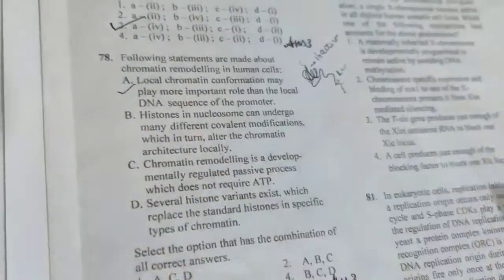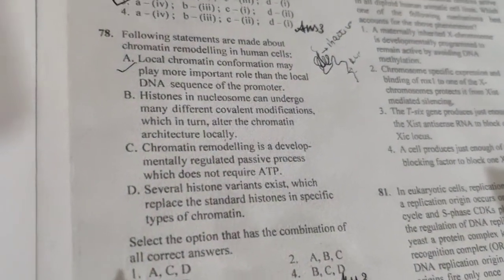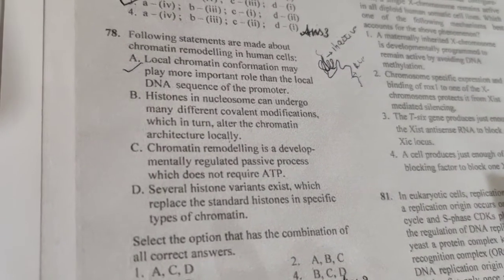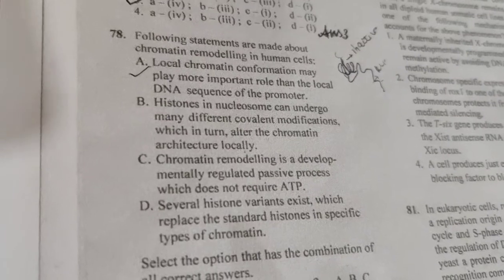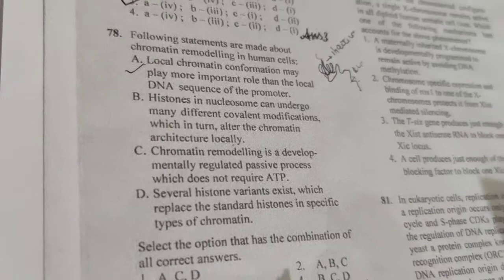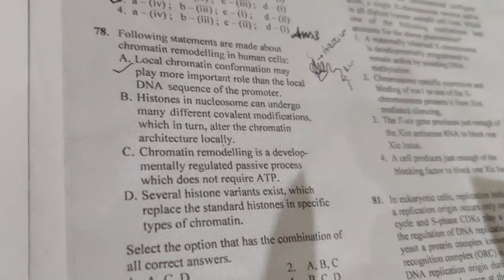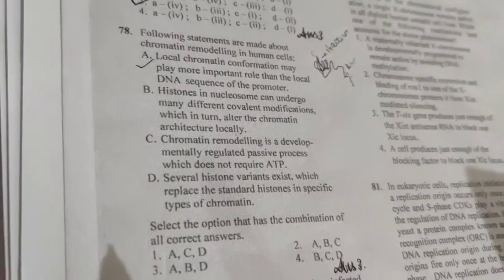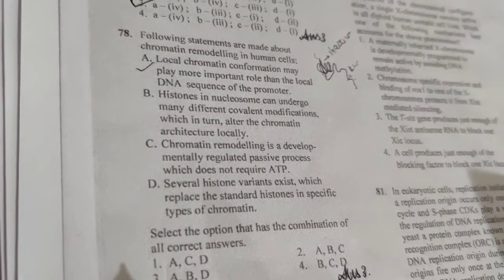Second, histones in the nucleosome can undergo many different covalent modifications which in turn alter the chromatin architecture locally. Yes, histones can undergo acetylation, methylation, and ubiquitination. And due to the modification, it is called heterochromatin. So it changes our chromatin architecture locally. So this statement is correct.